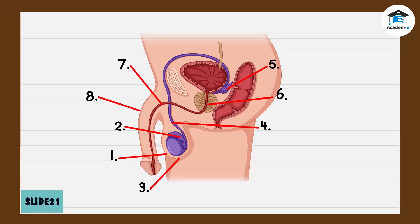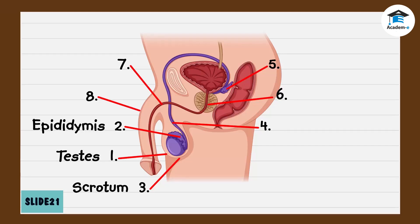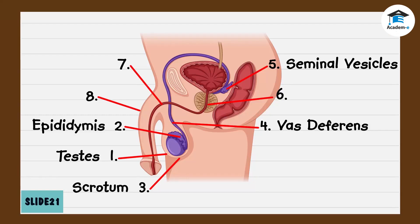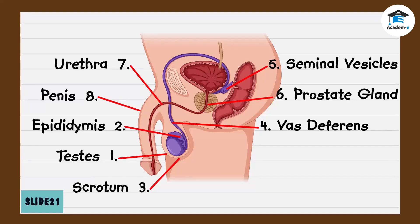The parts of the male reproductive system are: one, testes; two, epididymis; three, scrotum; four, vas deferens; five, seminal vesicles; six, prostate gland; seven, urethra; eight, penis.